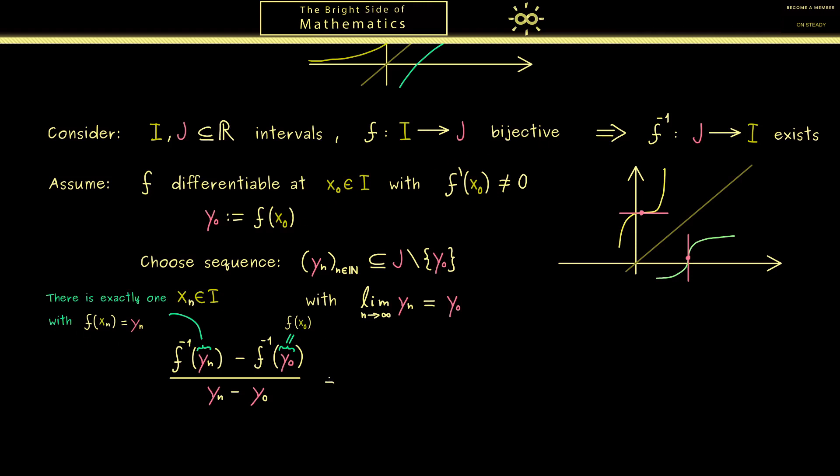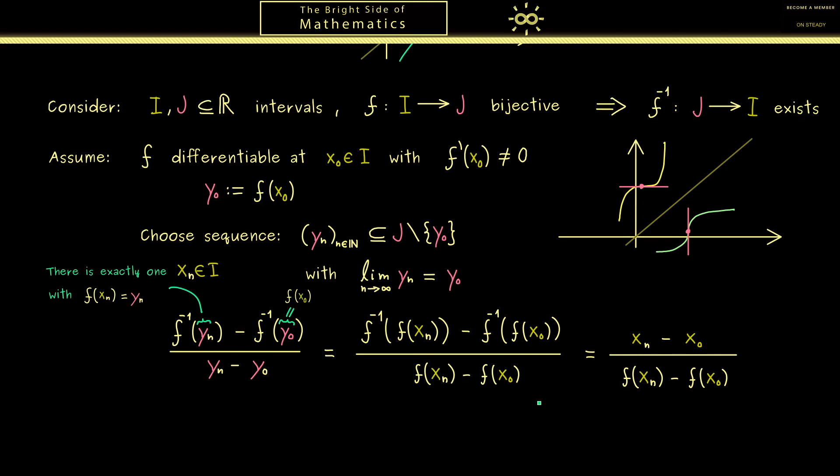Then let's put everything in and then we get the following. So as you can see in the denominator we have f of xn minus f of x0, and in the numerator we have this composition. However of course this is simply xn minus x0. Hence now we recognize this is exactly the reciprocal of the normal difference quotient. And in fact this is the translation to the function f we wanted. Because now we can simply perform the limit on the left hand side and the right hand side here, and then we get an equality that connects both derivatives.